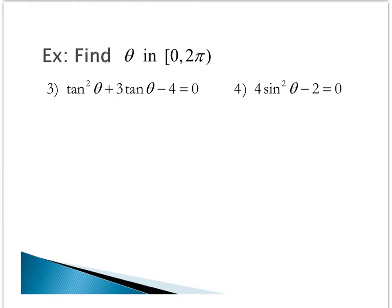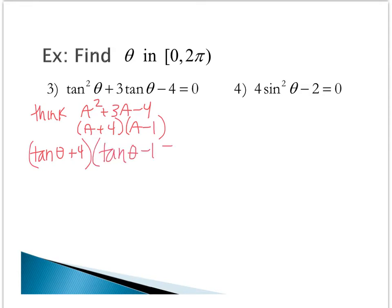In problem 3, we see a quadratic. Just like when we learned to factor quadratics with trig functions in chapter 5, you want to think that this problem is similar to a squared plus 3a minus 4. You would factor it into a plus 4, a minus 1. Using that same strategy, we will say that tangent of theta plus 4 multiplied with tangent of theta minus 1 equals 0.